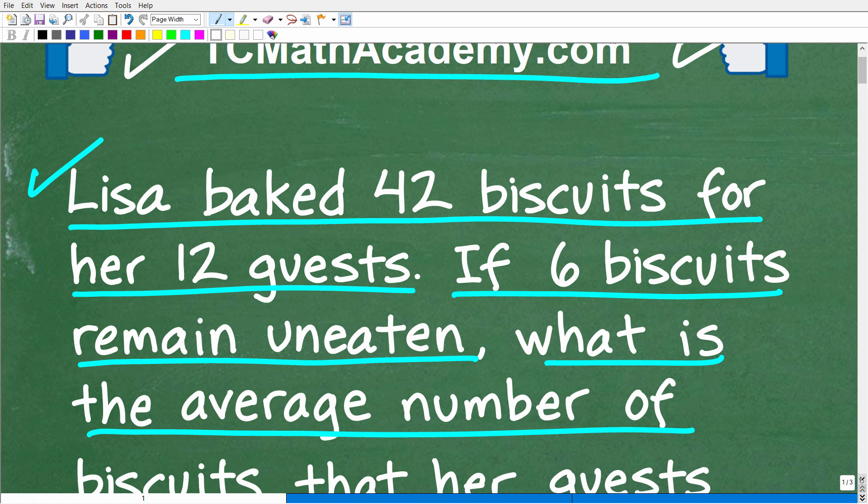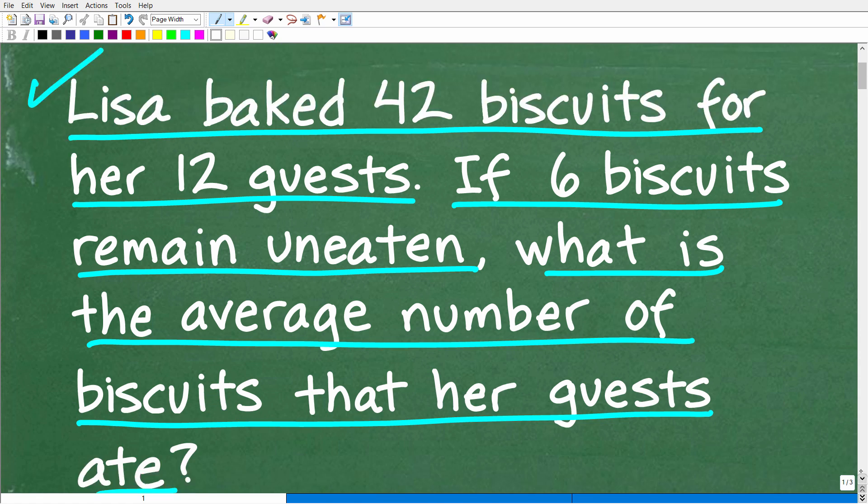Let's take one more look at the question before I show you the answer. So Lisa, she's very nice, she's going to bake 42 biscuits for her 12 guests. If six biscuits remain uneaten, what is the average number of biscuits that her 12 guests ate? So this is not that difficult, and hopefully all of you are going to get the right answer.